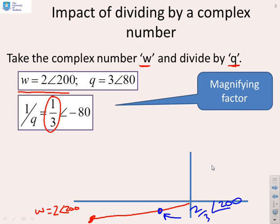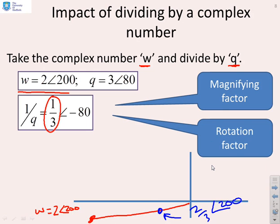And then I've got the rotation factor. I'm dividing by q, so it means the impact is to subtract 80 degrees. So that's a clockwise rotation, which is going to take me over here. I've moved clockwise by 80 degrees, so I'm going to end up with 2 over 3 arg 120.